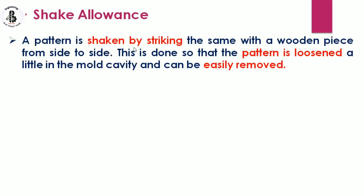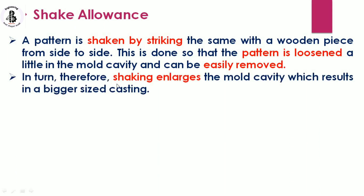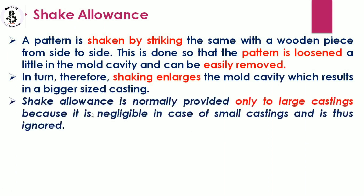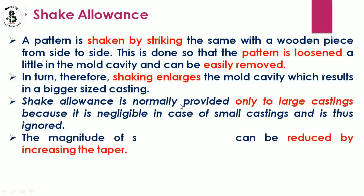The fifth allowance is shake allowances. A pattern is shaken by striking it with a wooden piece from side to side so that it loosens in the mold cavity and can be easily removed. This shaking enlarges the mold cavity, resulting in a bigger casting size. Shake allowance is normally provided only for large castings, as it is negligible for small castings and is thus ignored. The magnitude of the shake allowance can be reduced by increasing the taper.